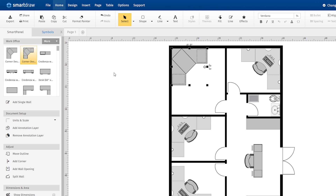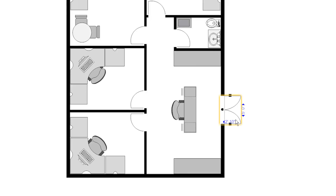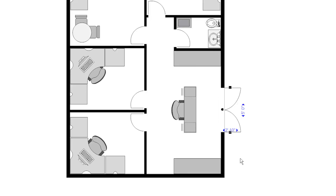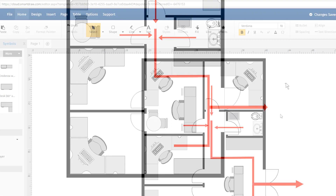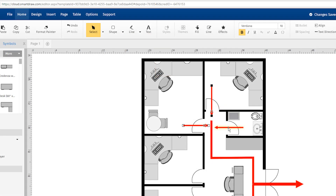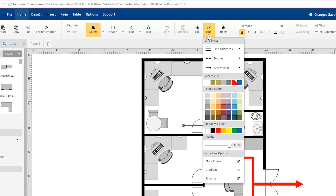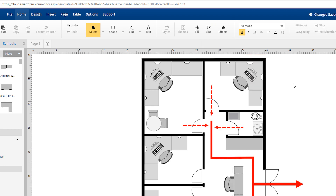Everything snaps neatly into place and it's easy to adjust and measure simply by dragging. Then, just add arrows to direct people to the proper exit routes. Just click and drag the lines where you want them to go and easily change the appearance of your lines to indicate primary and secondary routes.